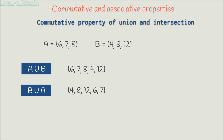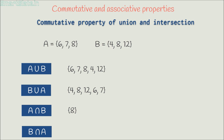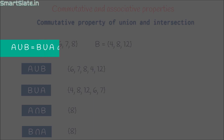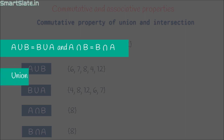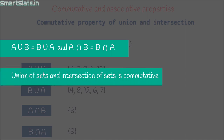Let's find if commutative property holds true for intersection as well. Consider these same sets. First, find out the intersection of A and B — it is 8, because 8 is present in both sets. If we calculate the intersection of B and A, the meaning is the same — it is the common element between B and A, which is 8. So A intersection B and B intersection A mean the same. Hence we proved the commutative property of intersection of sets. Union of sets and intersection of sets is commutative in nature.